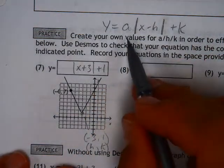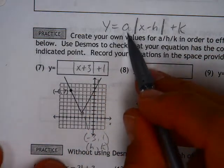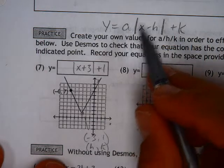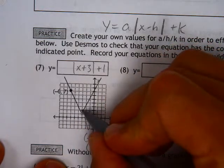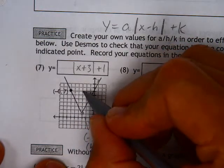Now the a value, the only difference there in the a is what is the slope. Okay, it's how steep is this thing? And to do that, you can count up 1, 2, 3, 4, 5, 6.